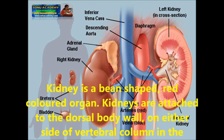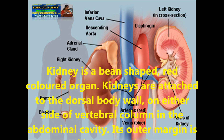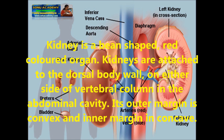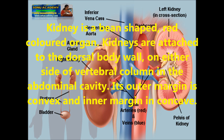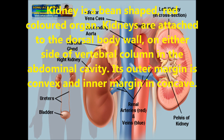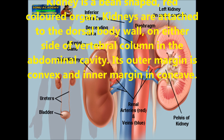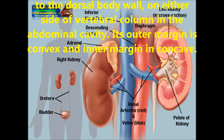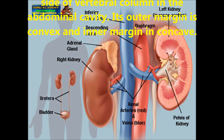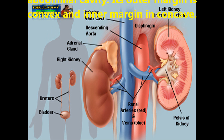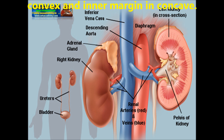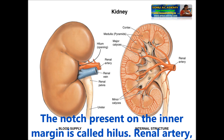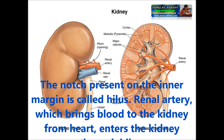We will start by discussing the kidney. The kidney is a bean-shaped, red-colored organ. The kidneys are attached to the dorsal body wall on either side of the vertebral column in the abdominal cavity. Its outer margin is convex and the inner margin is concave.